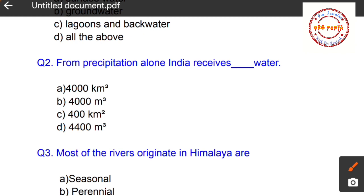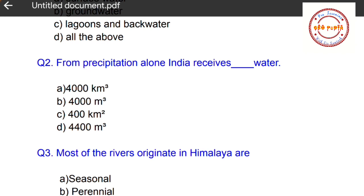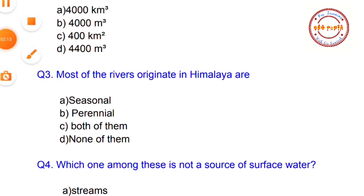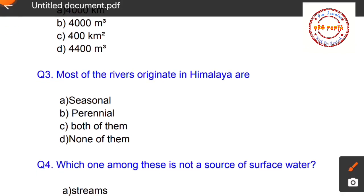Question number two: From precipitation alone, India receives how much water? Option A: 4000 kilometer cube, Option B: 4000 meter cube, Option C: 400 kilometer cube. The correct answer is Option A — from precipitation alone, India receives 4000 kilometer cube of water.